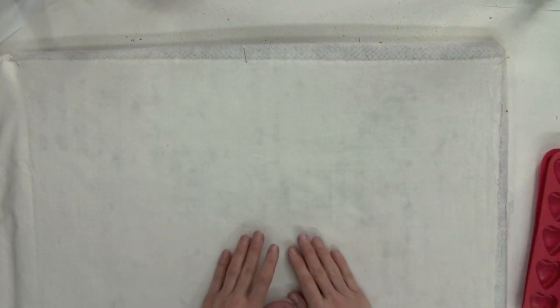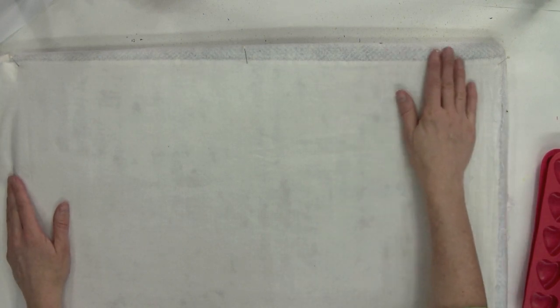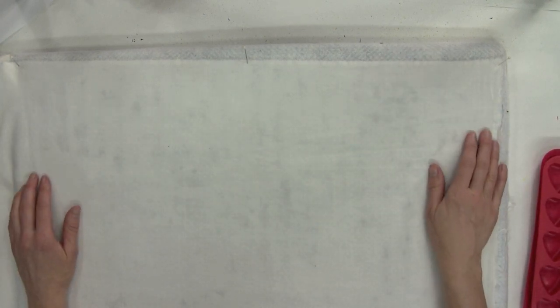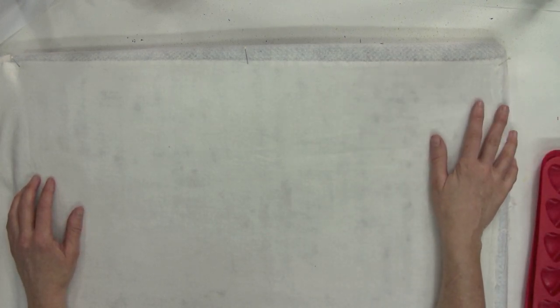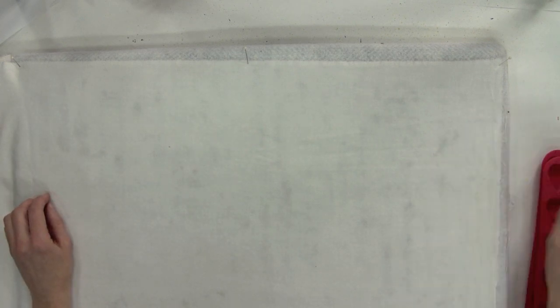I've got some fabric here that is pre-washed and I have pinned it onto my printing board. You don't need a printing board, but it just makes it easier because the paint will kind of pull the fabric up. So if you don't have a printing board, if you can work on a surface that you can tape the fabric to, that will help.